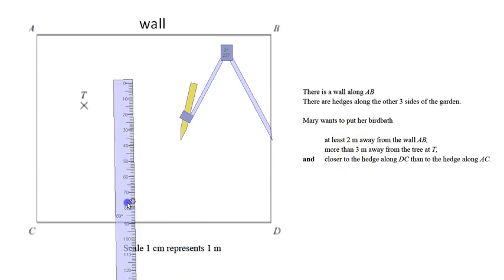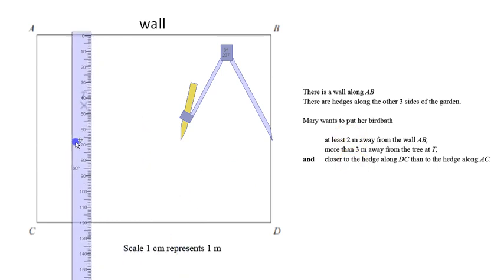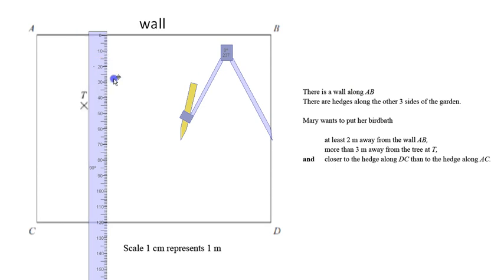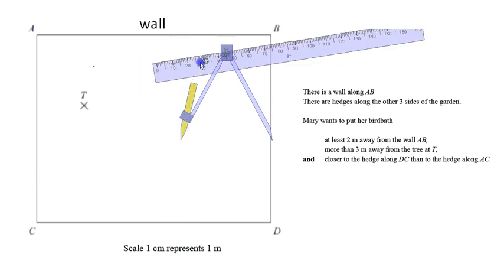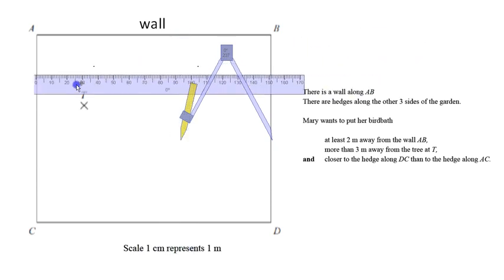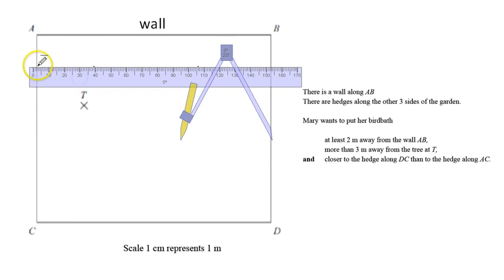It has to be at least two meters away from the wall, so I'm just going to get my ruler and measure two centimeters. One centimeter is one meter, and I'm just going to put a blob at two, move it along a little bit, put a nice little blob at two, rotate it so it's flat, and then I'm just going to draw a line through there.